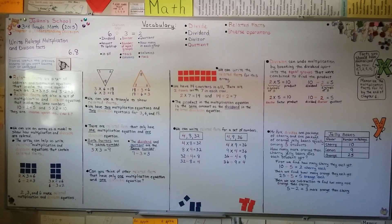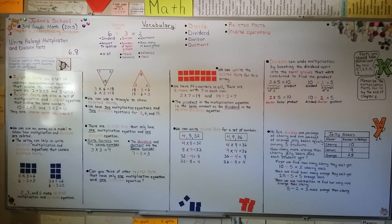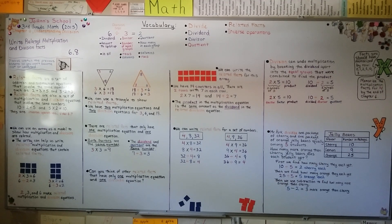So remember, related facts are a set of equations that involve the same numbers, and they're inverse operations. We can write a set of multiplication and division equations that involve the same numbers. Also remember that some related facts only have one multiplication equation and one division equation. We're going to talk about dividing with one and zero in the next lesson. Have a great day. Bye!